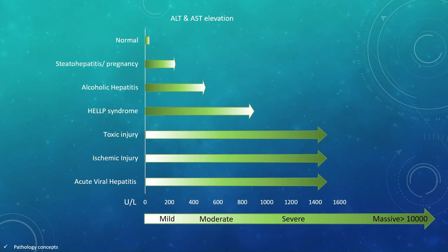This graph suggests different causes of ALT and AST elevation. The marked elevation of ALT and AST occurs in toxic injury, ischemic injury and viral hepatitis, which can be more than 10,000 international units per litre.